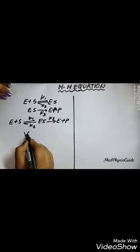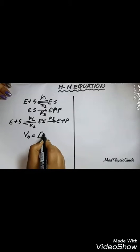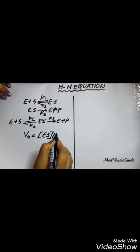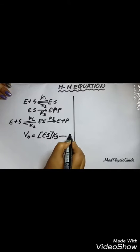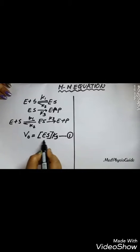Our main aim is to find the equation to denote the value of V0, and V0 is determined by the breakdown of the ES complex to the product. Hence, V0 is equal to the concentration of the ES complex multiplied by rate constant K3, which we consider as equation 1.